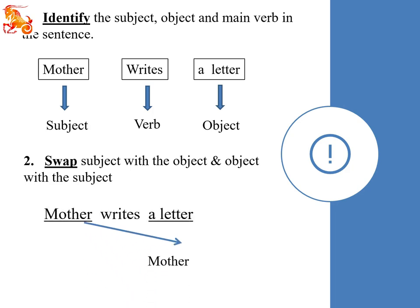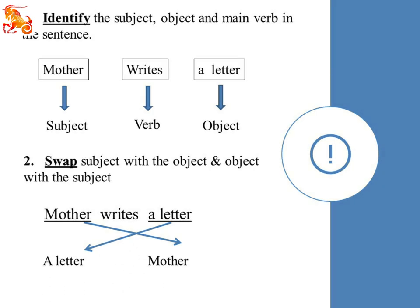The very first step is identifying the subject, object, and the verb. To make it easier for you, I have taken our previous sentence: Mother writes a letter. You already know the main parts — subject: mother, object: letter, and the verb: writes.